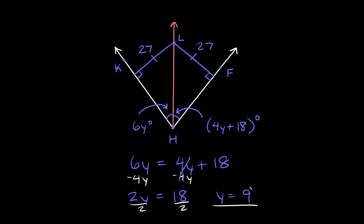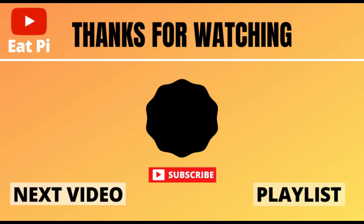You can plug your answer into either equation. Plugging 9 into 6y gives 6 times 9, which equals 54. So this angle is 54 degrees, and the other angle is also 54 degrees. If you found the video helpful, definitely leave a thumbs up, and if you have any questions or want to see other examples, let me know in the comments below.